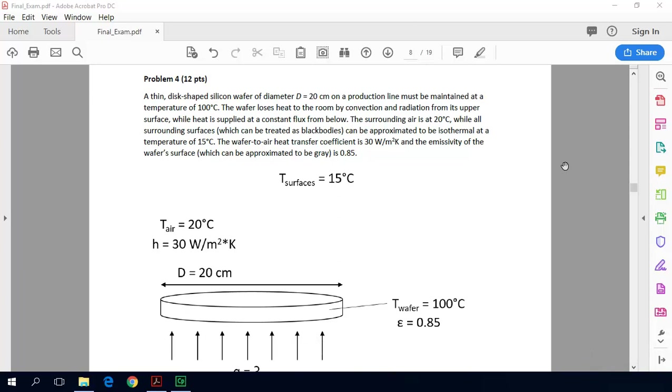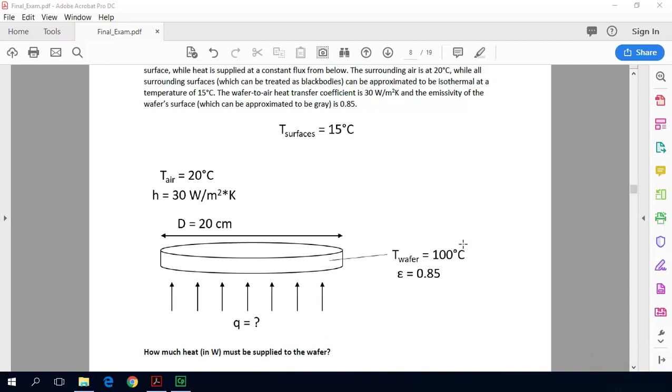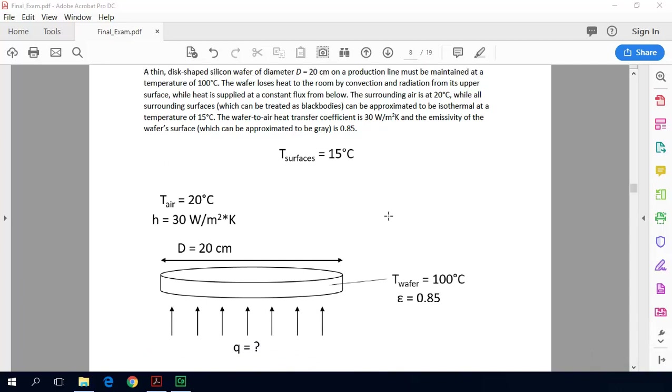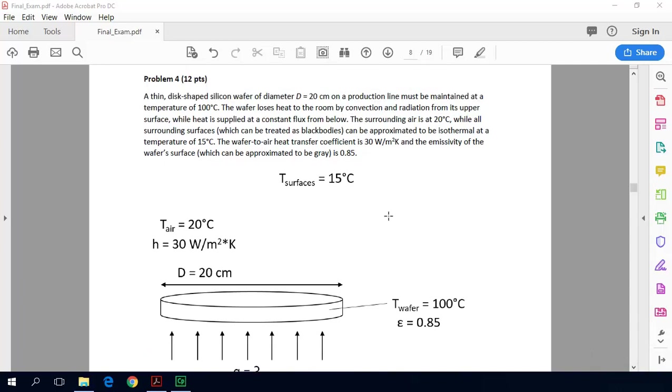The wafer-to-air heat transfer coefficient is 30 watts per square meter per Kelvin, and the emissivity of the wafer's surface, which can be approximated to be gray, is 0.85. So what we have is we need to maintain the wafer temperature surface at 100 degrees by supplying this heat from below.